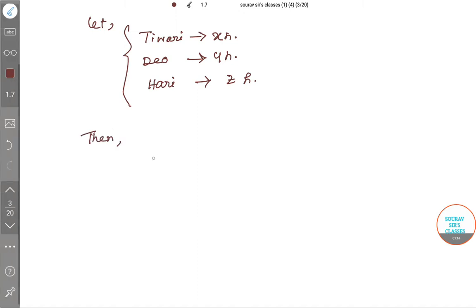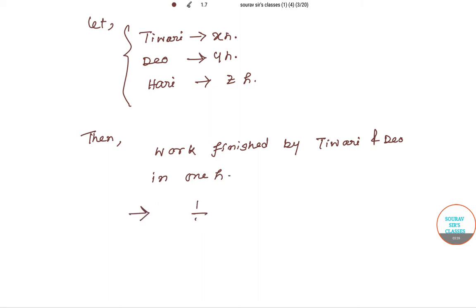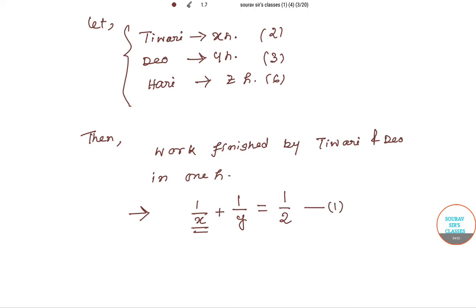Work finished by Tiwari and Dio in one hour gives us: 1/X + 1/Y = 1/2. We label this as Equation 1. I'm boxing it as we will need it later.